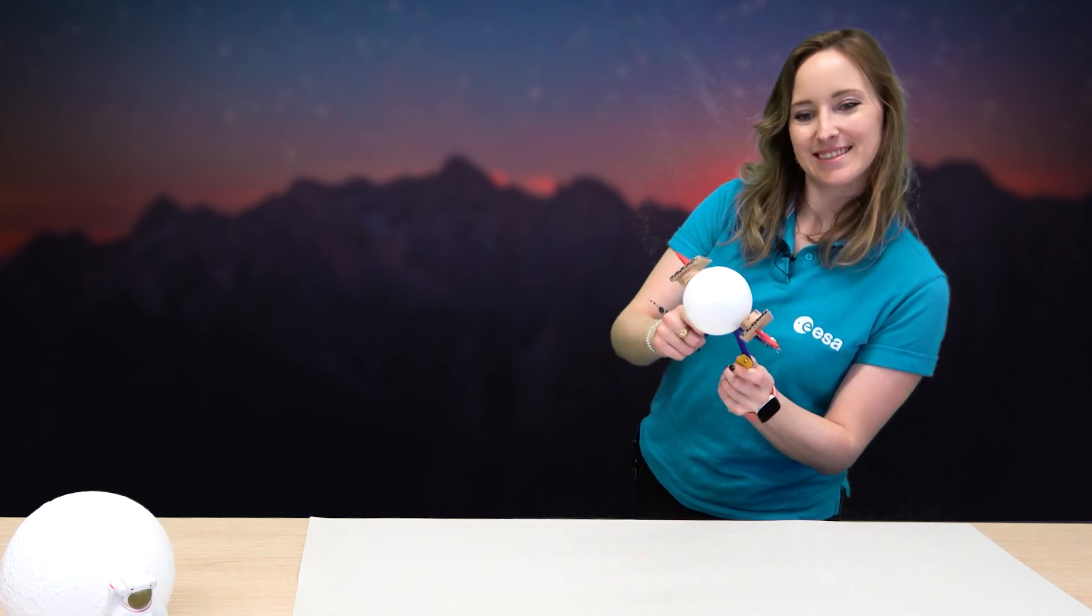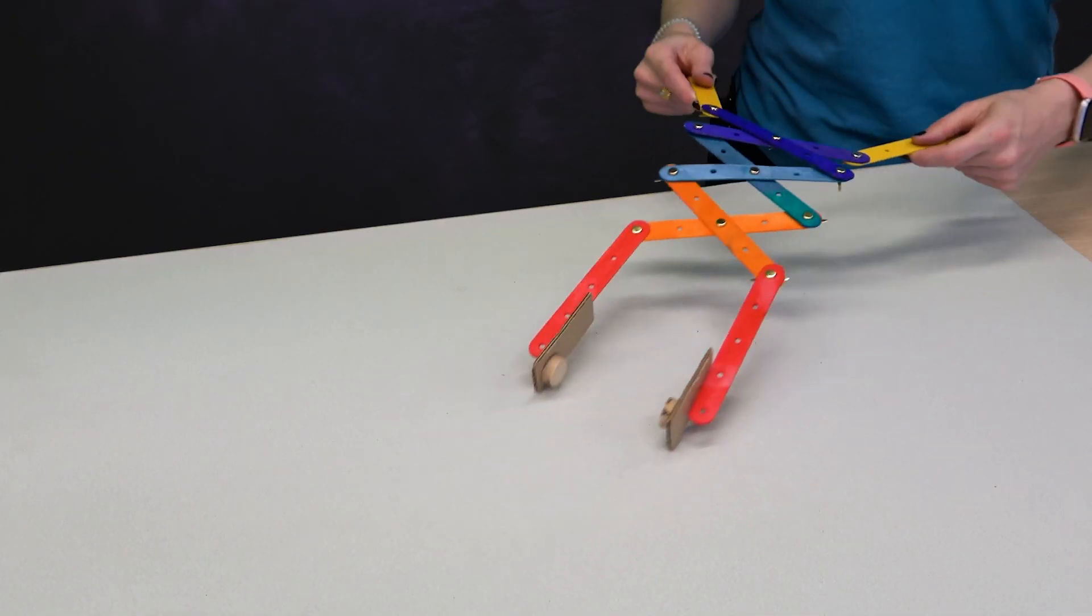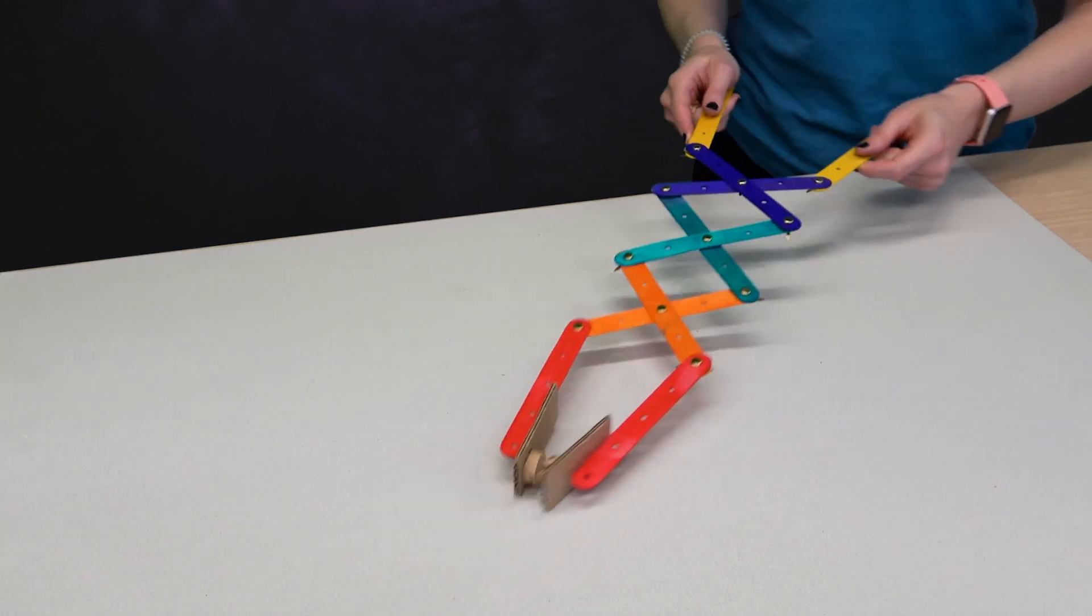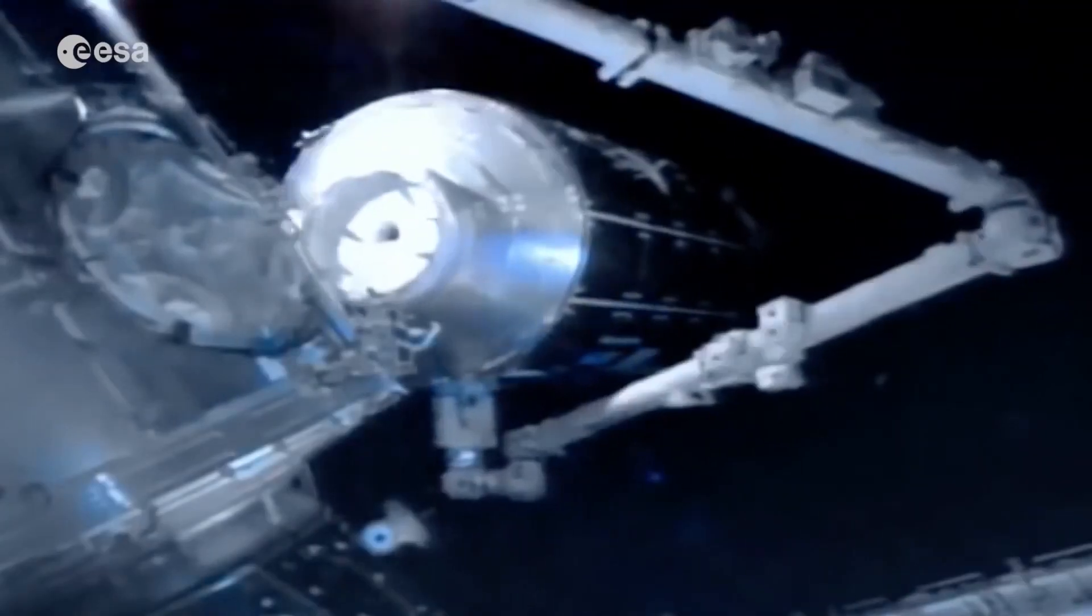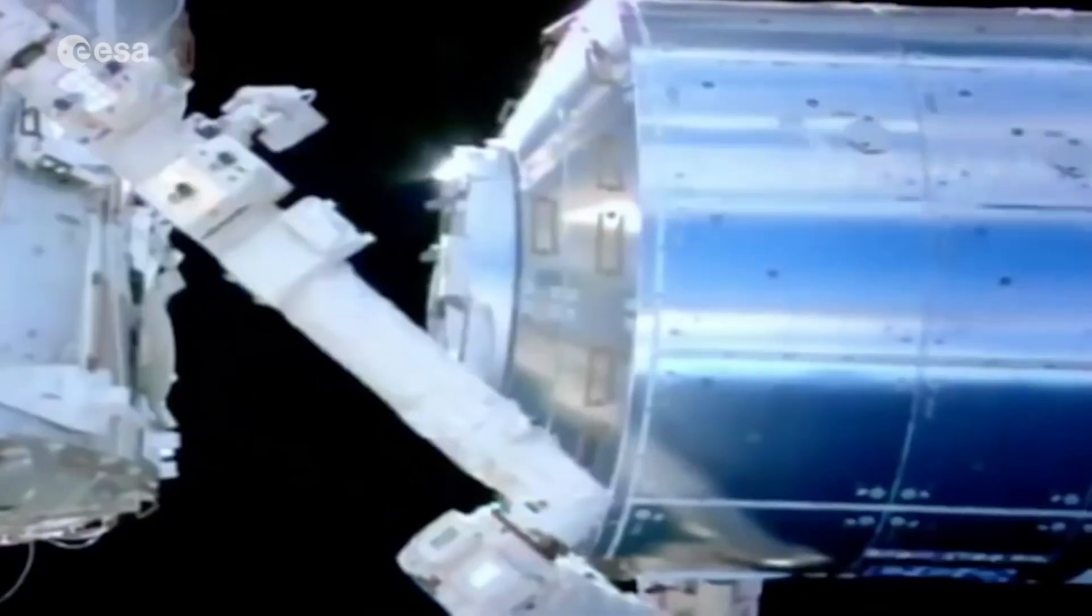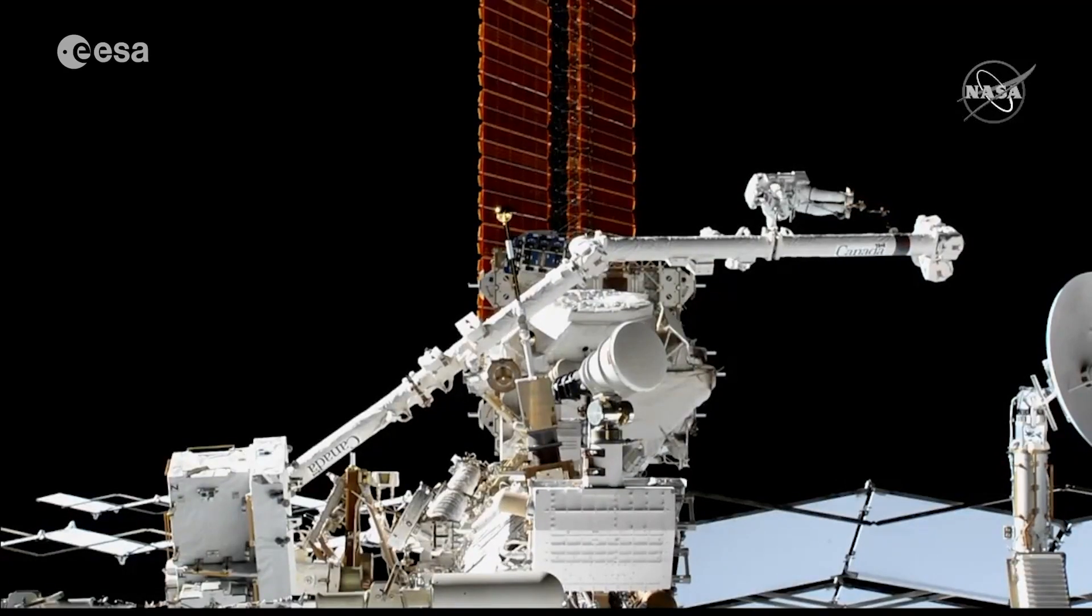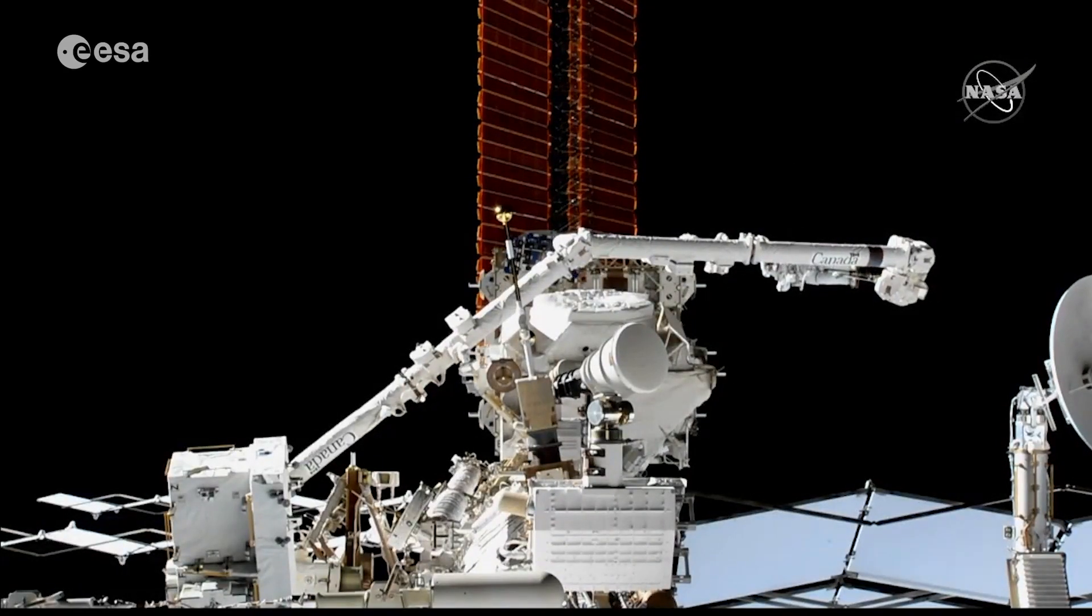Robotic arms can have various sizes and purposes. They can perform maintenance work and be equipped on scientific experiments. In space, robotic arms can be used to manipulate and transport large equipment and assist astronauts during spacewalks outside the International Space Station.